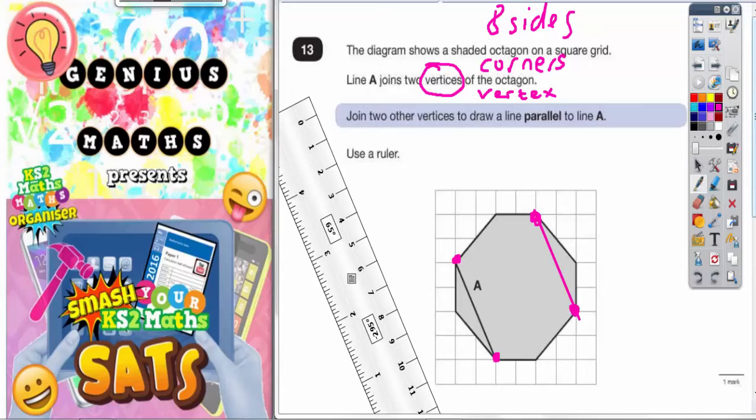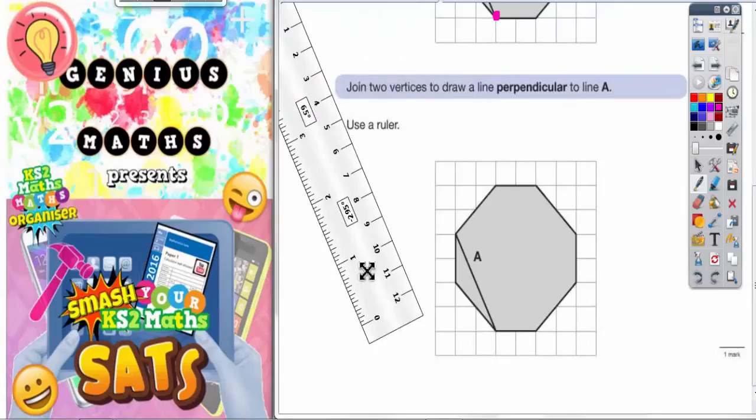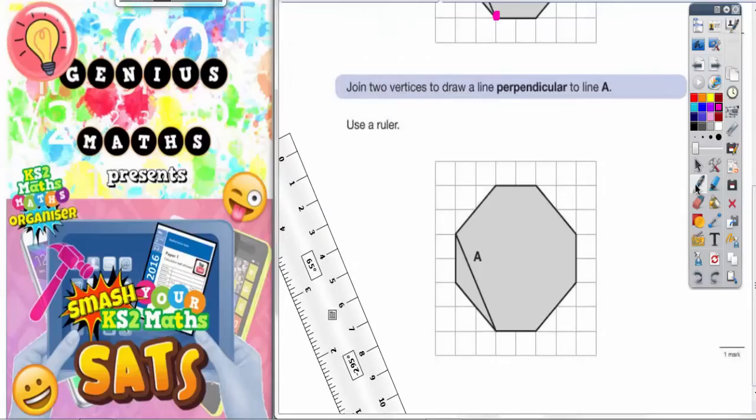Part B of this question says to join two vertices to draw a line which is perpendicular to line A. Now perpendicular is a posh word for at right angles to. And a right angle is 90 degrees. So we basically need to draw a line that makes a 90 degree angle with line A.